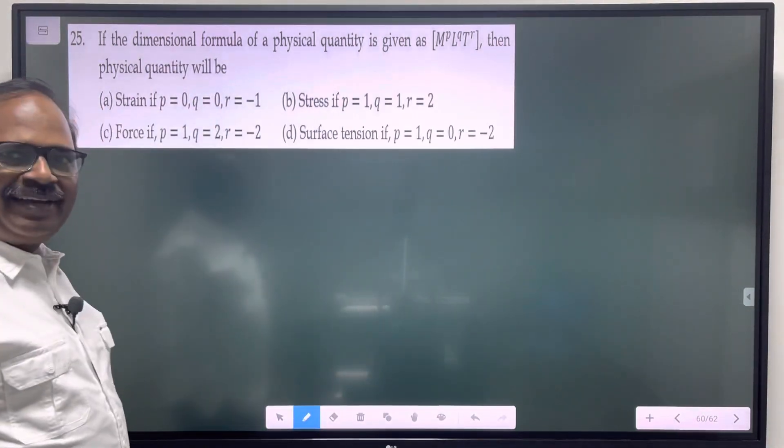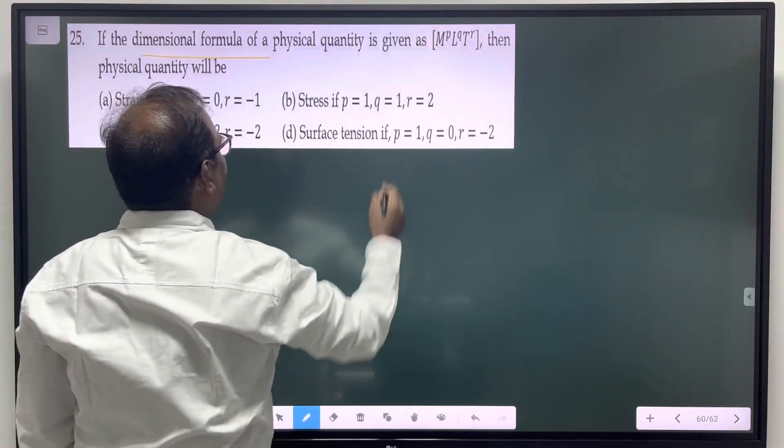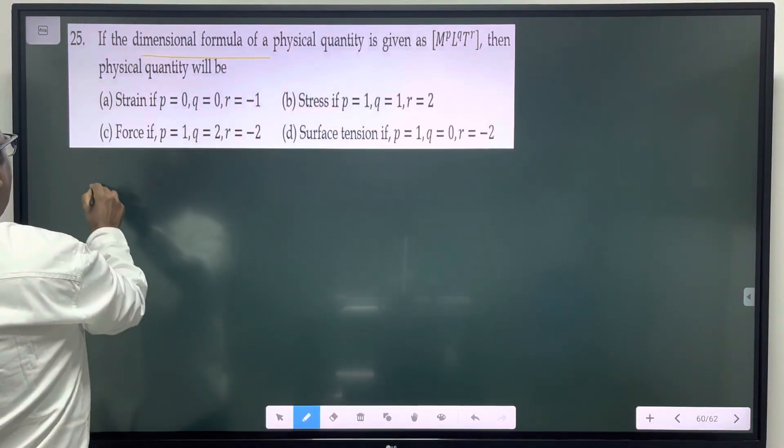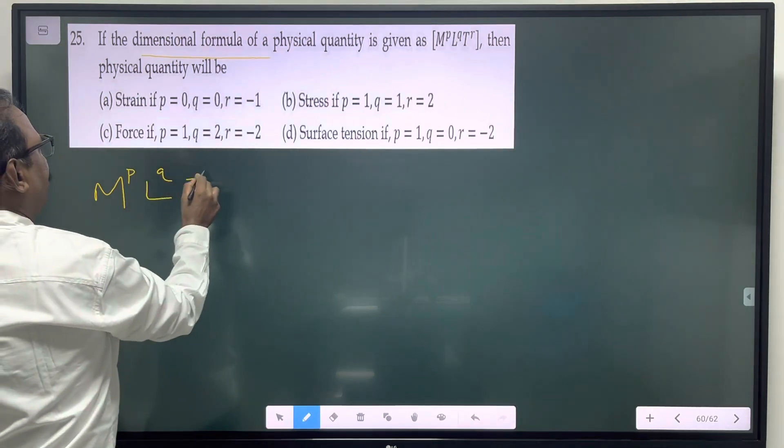The dimensional formula for a physical quantity is given in this format: M power P, L power Q, T power R.